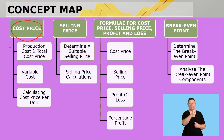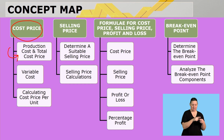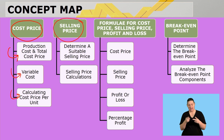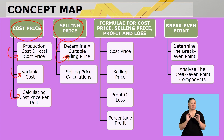Today we're going to first look at cost price, covering production price, total cost price, variable cost, and calculating a cost per unit. After cost price, we're going to look at selling price, where we will examine determining a suitable selling price and total selling price.